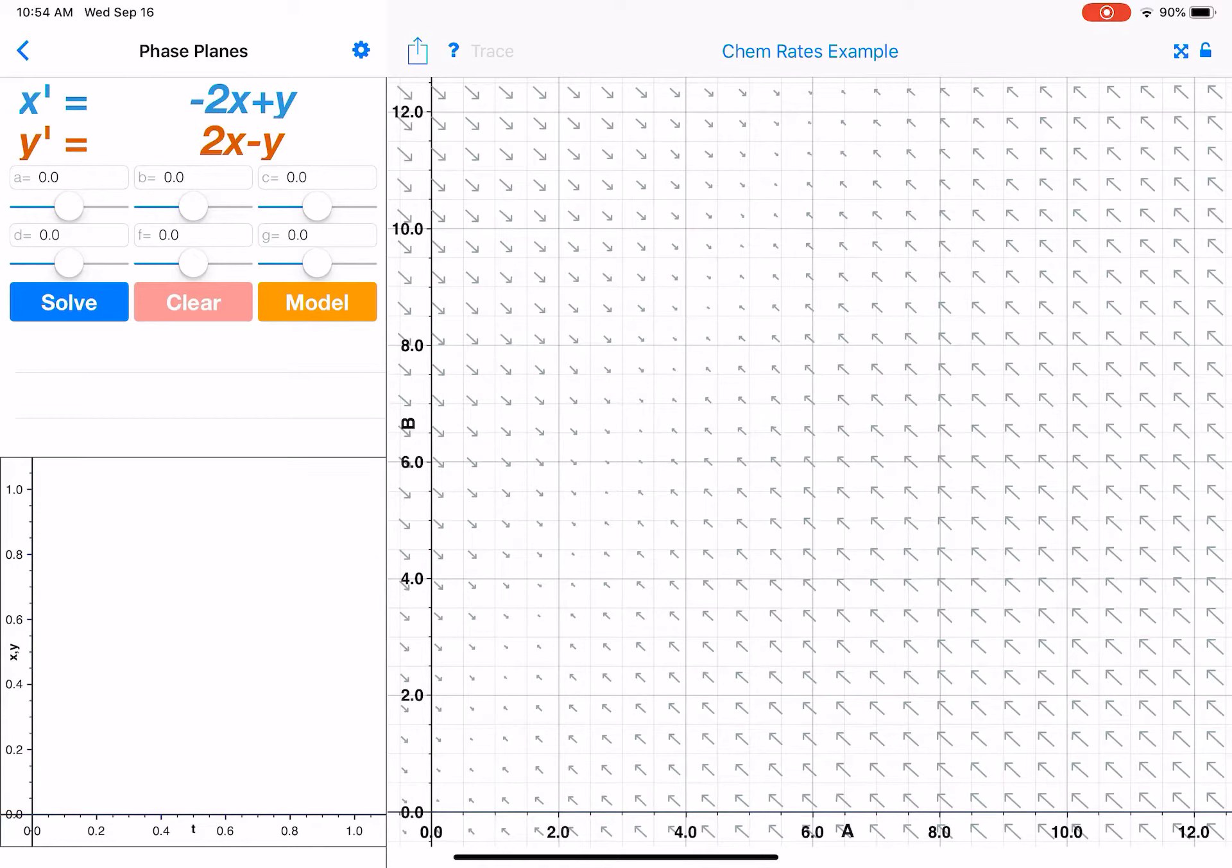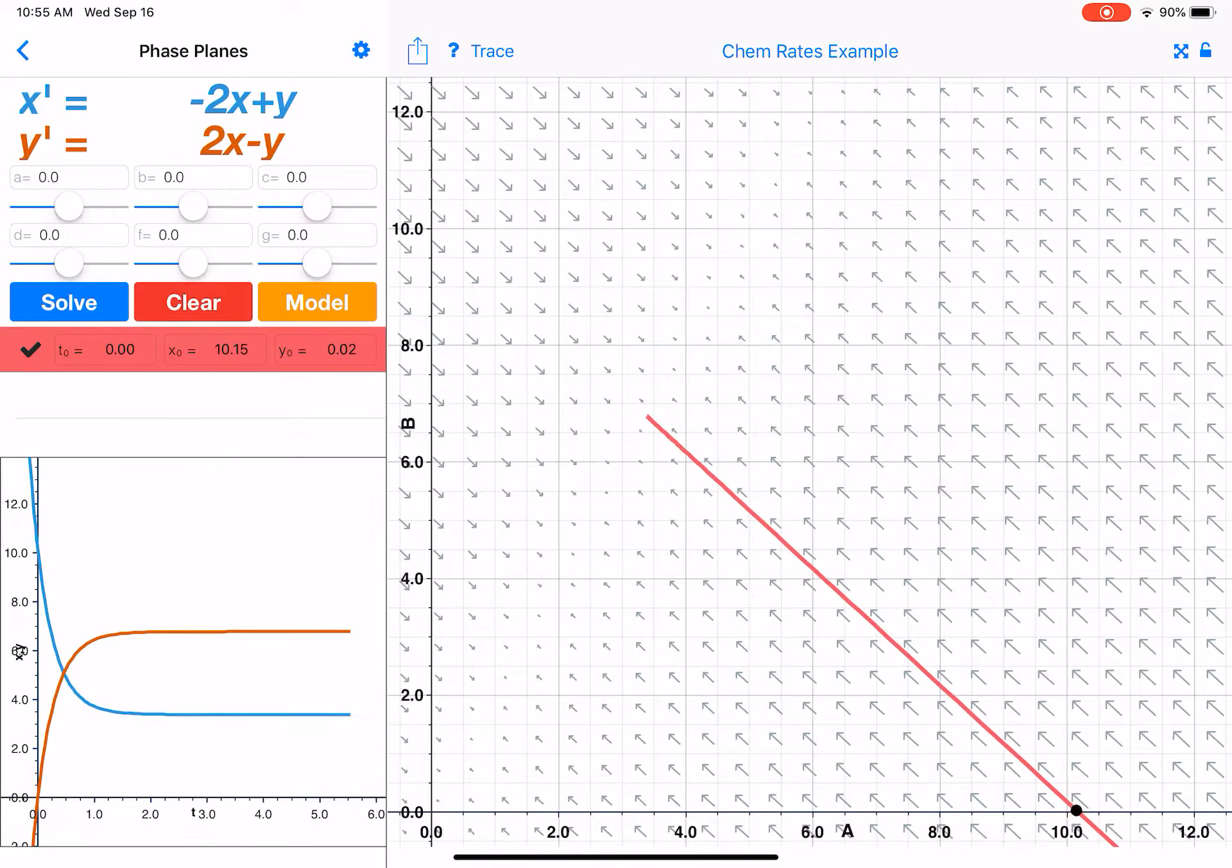And you can see that solutions—if I start, say, with nothing for B and then 10 of A—solutions seem to approach an equilibrium point there.